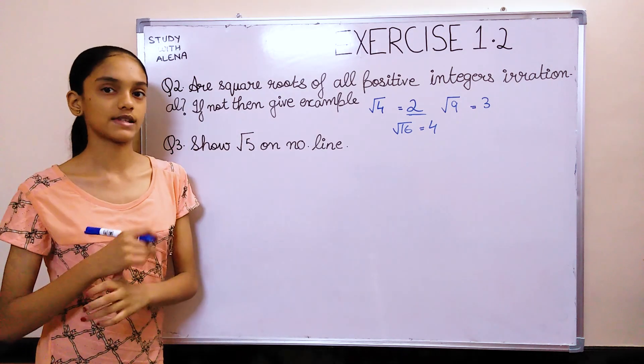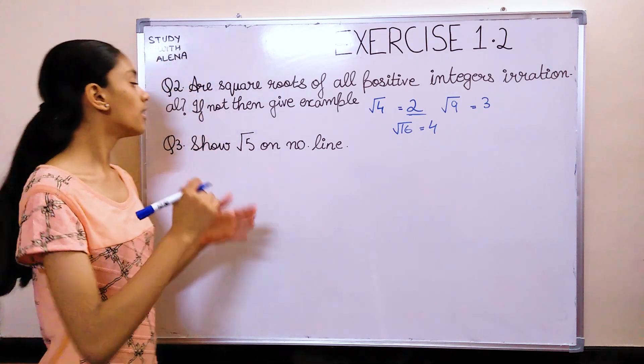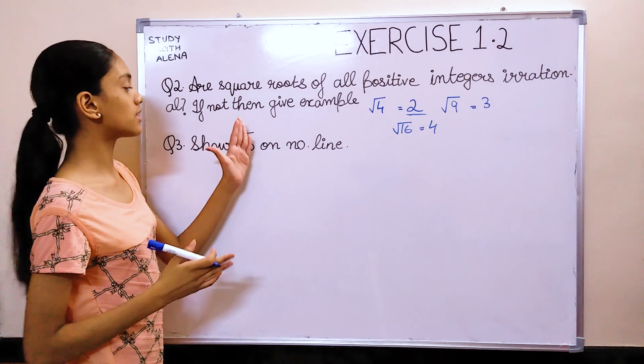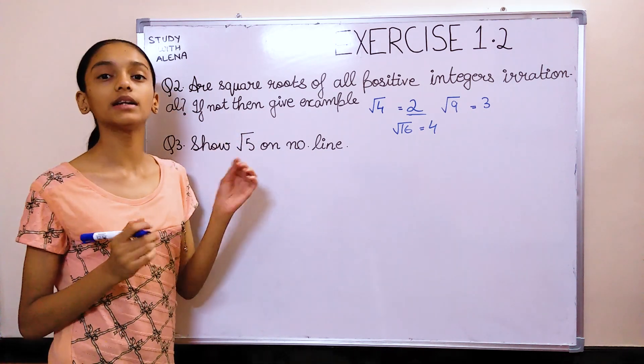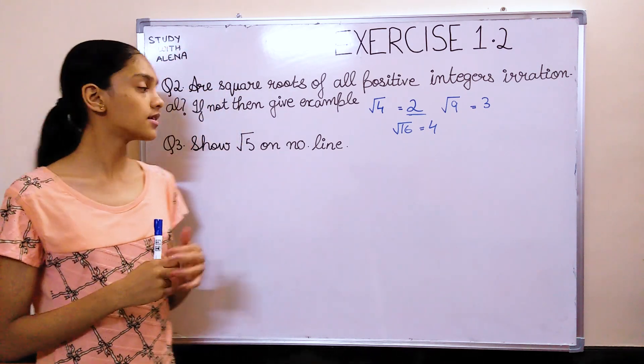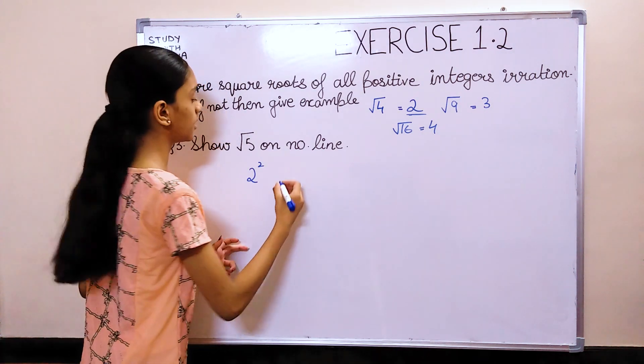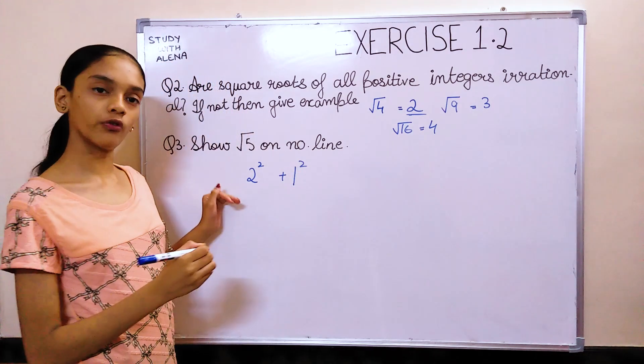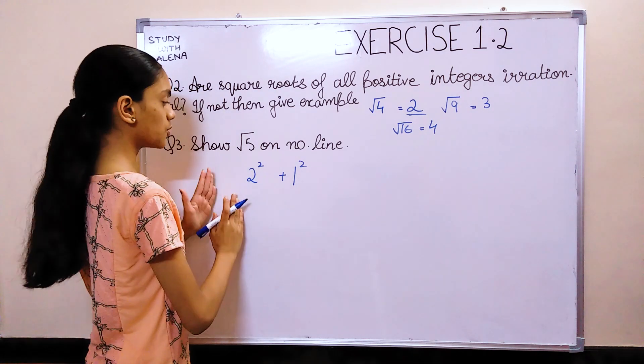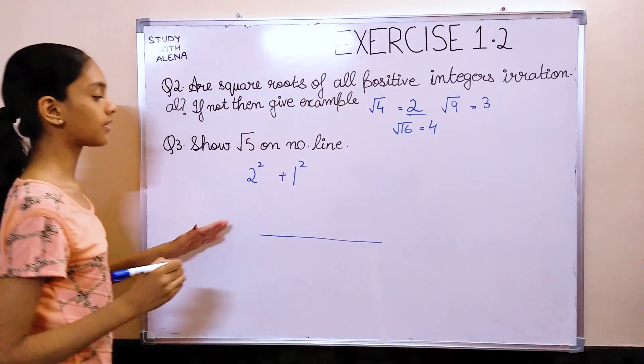Now, moving on to the last question of this exercise, which is to show root 5 on a number line. Now, for showing root 5 on a number line, first, just forget for a second that it is root 5. Assume it as 5. We have to write 5 as a sum of 2 squares. So, 5 can be written as 2 square plus 1 square, which is 4 plus 1 equals to 5. So, now we have two numbers, 2 and 1. Now, we can draw a line.